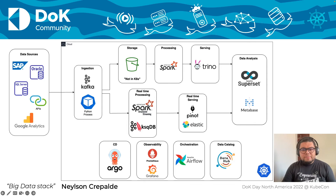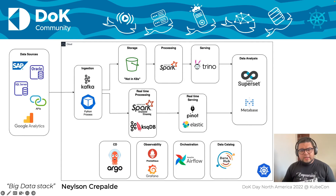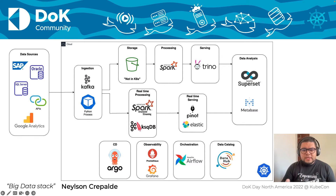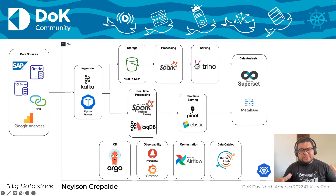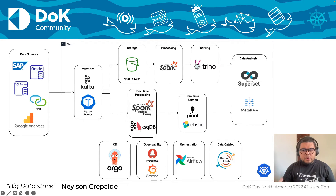For processing, we mainly use Spark. Probably today, Spark is the most used big data framework worldwide. It's a great tool — it has the capacity to process terabytes of data really, really fast. And because it's a cluster engine, you can scale horizontally very easily with Spark and process huge amounts of data. So we adopted this as our standard, and we now run Spark on Kubernetes.